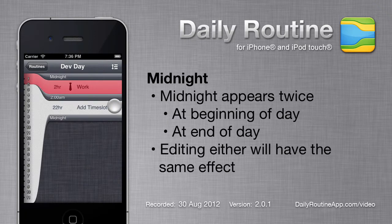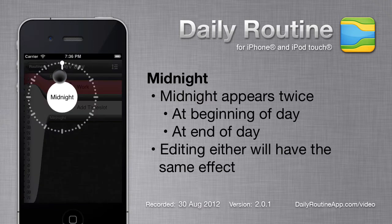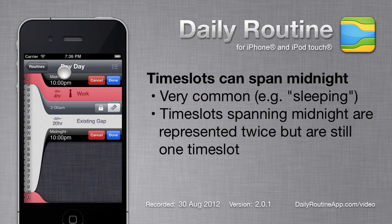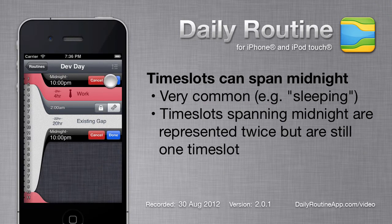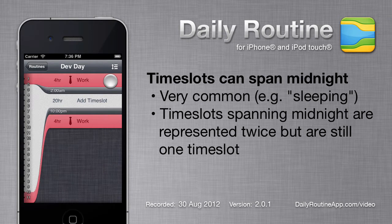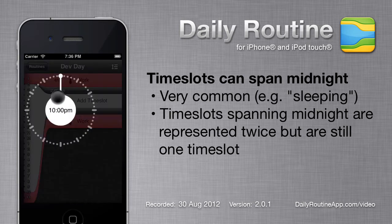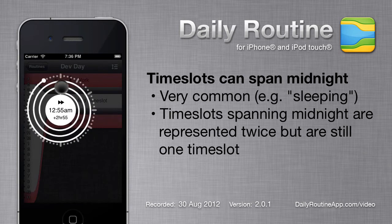You've probably noticed that the midnight row is repeated at the top and bottom — we can edit either one with the same effect. We also see that a timeslot can span across midnight. When I tap Done, there appear to be two instances of our timeslot; they're actually the same, just represented twice to fit our typical notion of a day. For now, I'll change this back to 9am.